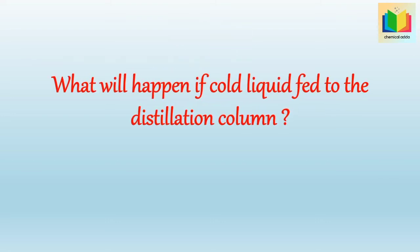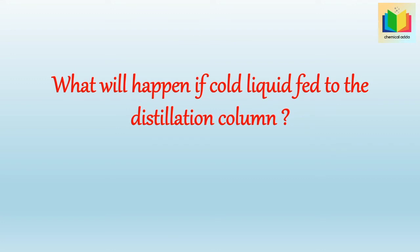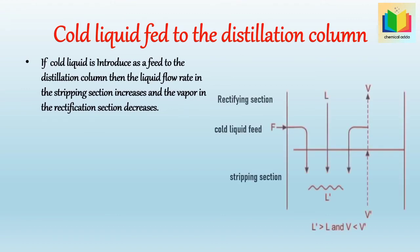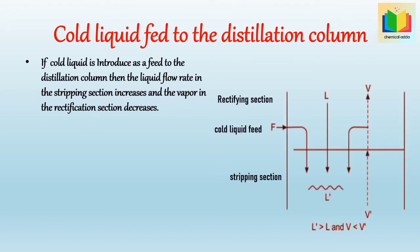Next question: what will happen if cold liquid is fed to the distillation column? If cold liquid is introduced as a feed, then the liquid flow rate in the stripping section increases and the vapor flow rate in the rectification section decreases. Because as the cold liquid is used as feed, it requires more heat energy from vapor to attain column temperature, hence the vapor flow rate in the rectification section decreases due to increase in liquid flow rate in the stripping section. Hence we get L' > L and V < V', where L' is liquid flow rate in stripping section, L is liquid flow rate in rectifying section, V' is vapor flow rate in stripping section, and V is vapor flow rate in rectifying section.